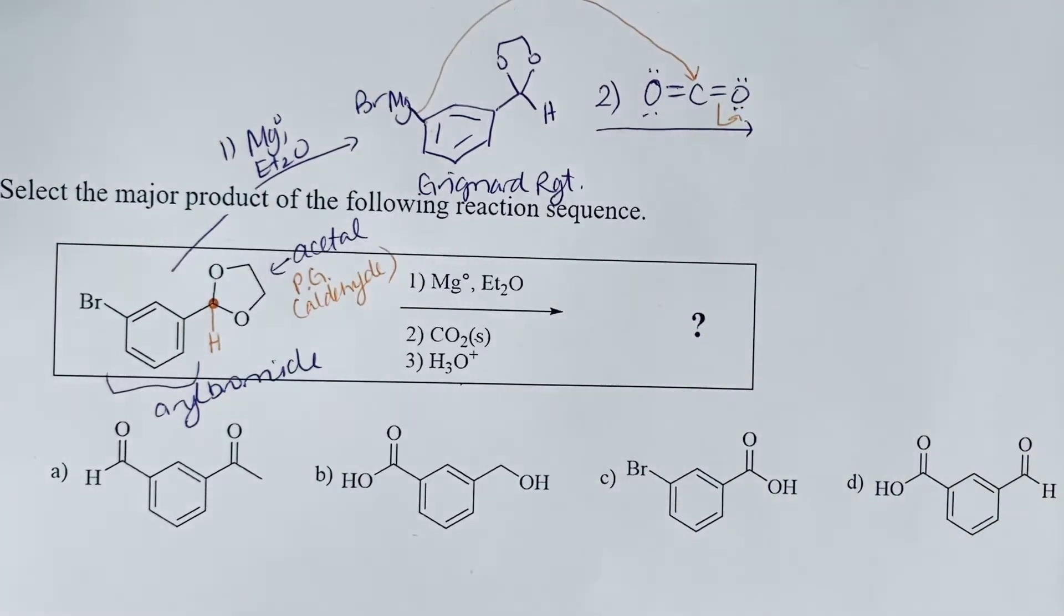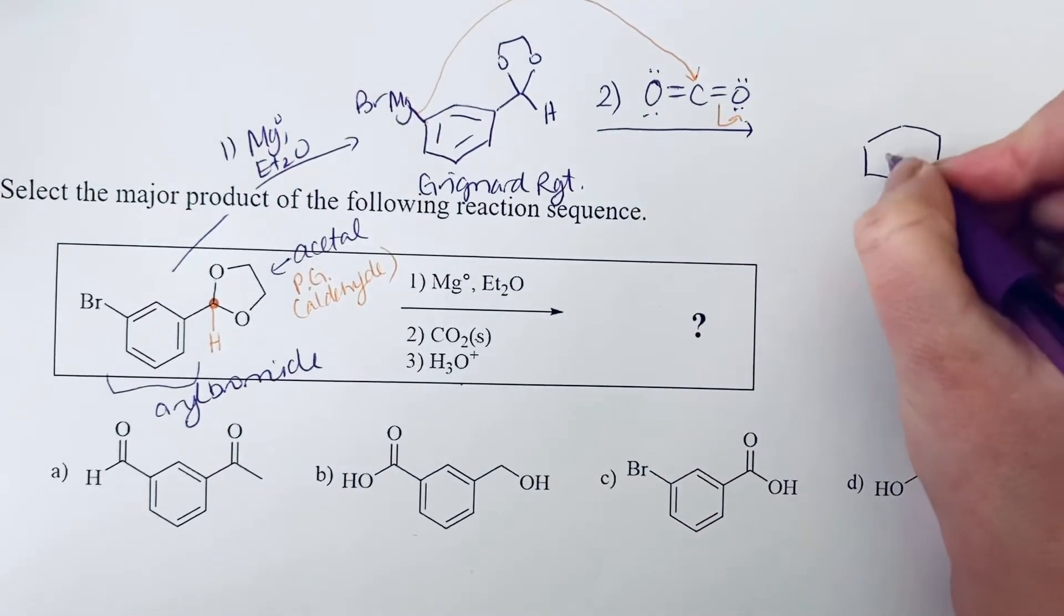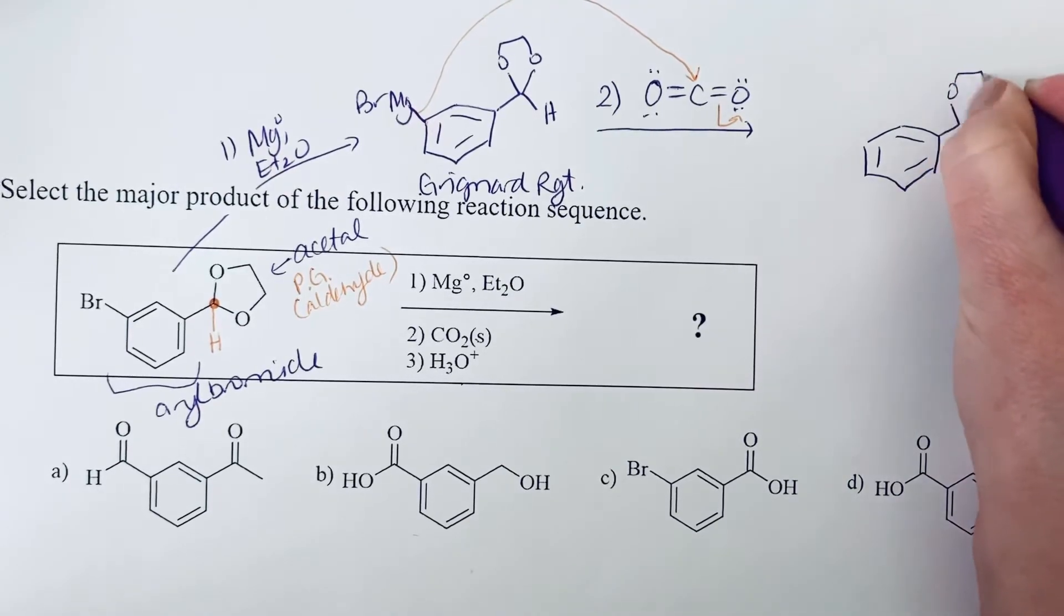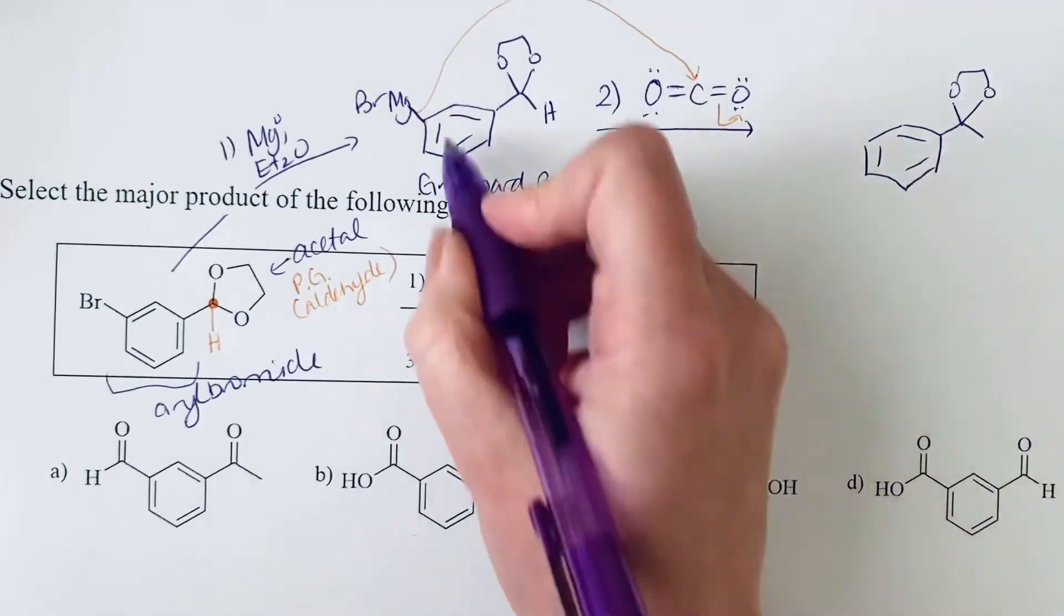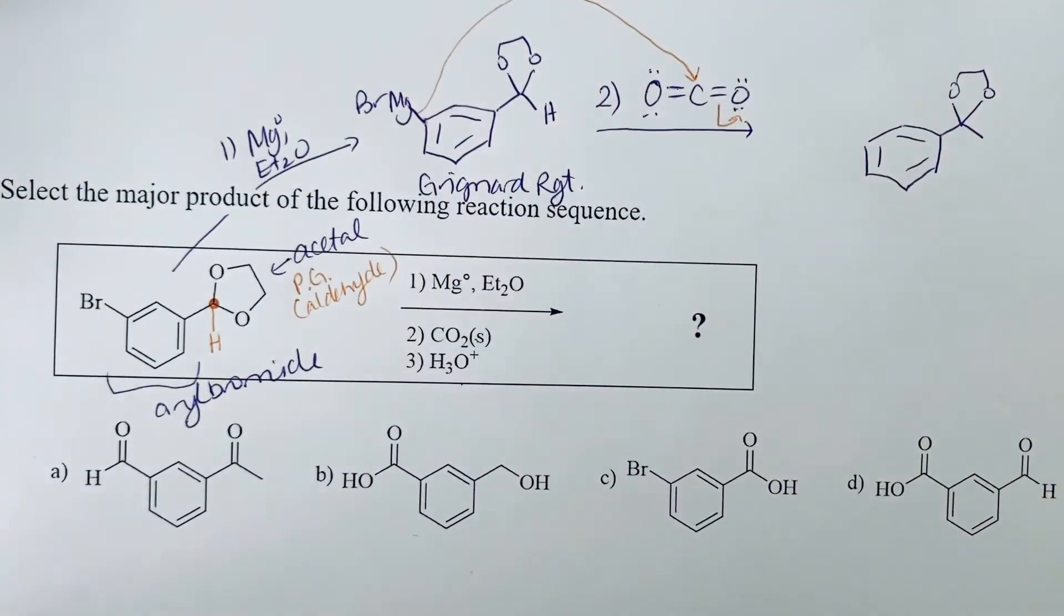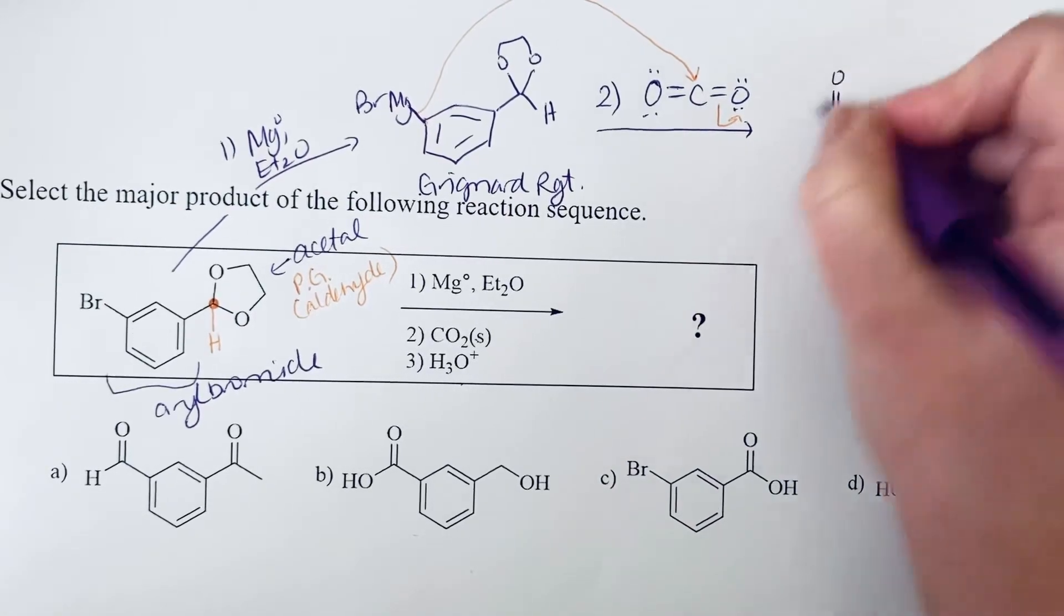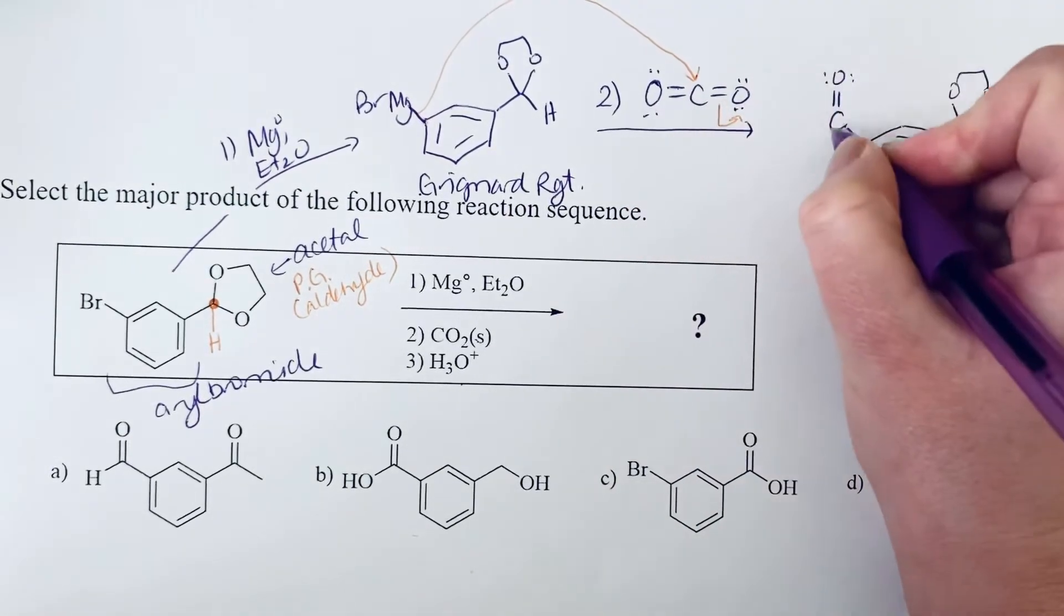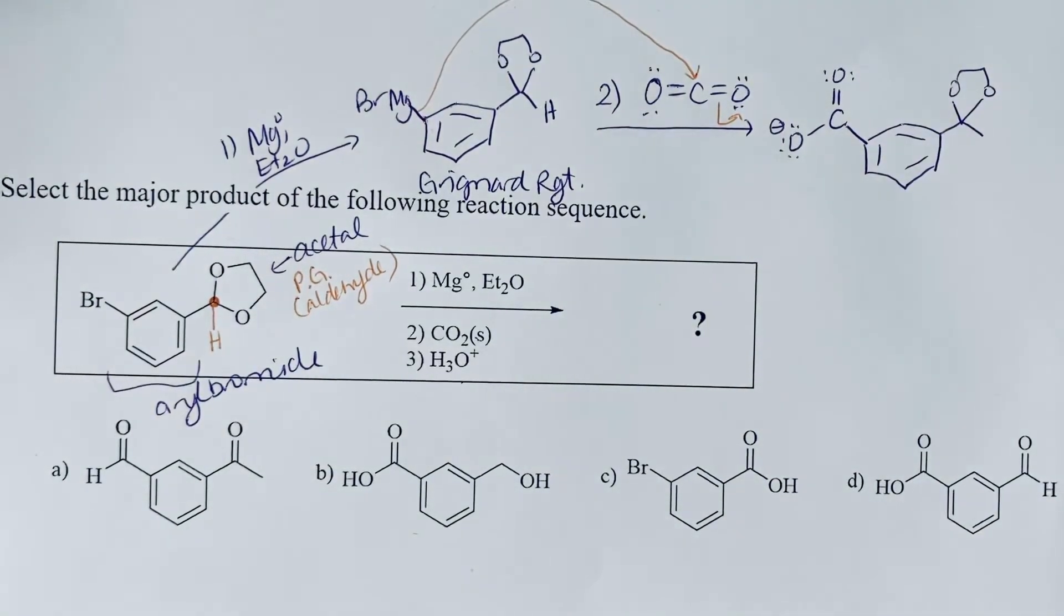And so after we do that, we will see that we have still our benzene ring, still our acetal. And our new bond here is between the carbon of the benzene ring and the carbon of that carbon dioxide. And so we've still got a pi bond left. And then we have O minus. So we have a carboxylate.